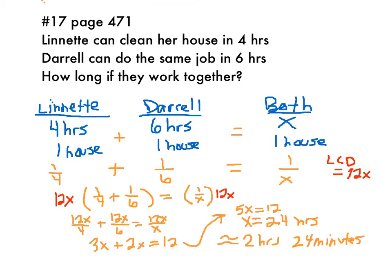I went ahead and did the work here in this problem. It's number 17 on page 471. I summarized the problem at the top. You're told that Lynette can clean the house in four hours. Her husband Daryl can do the same job in six hours. If the two work together, how long will it take them to clean the house?